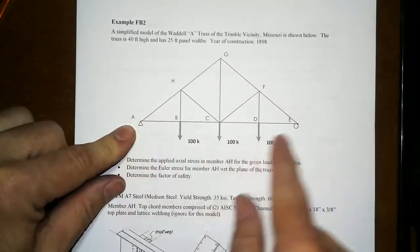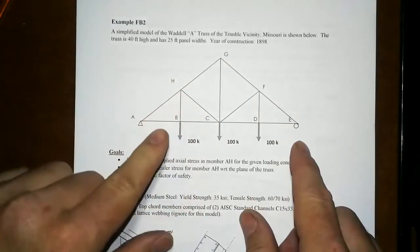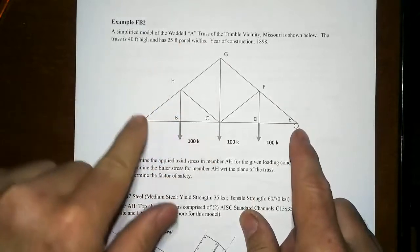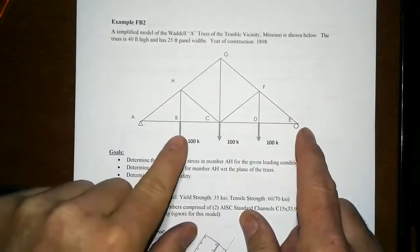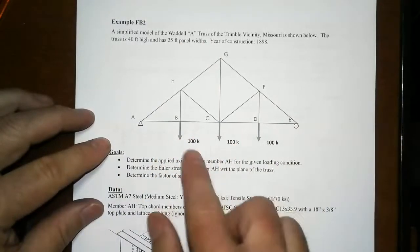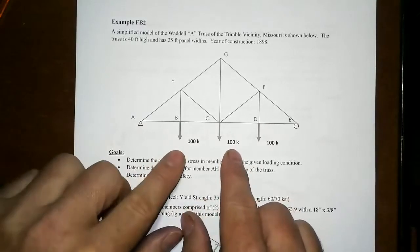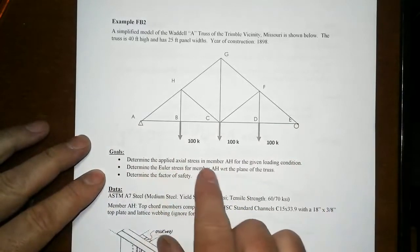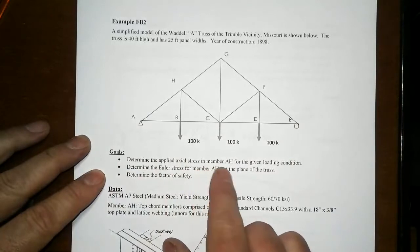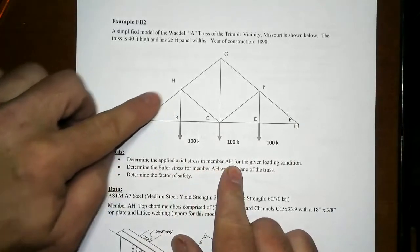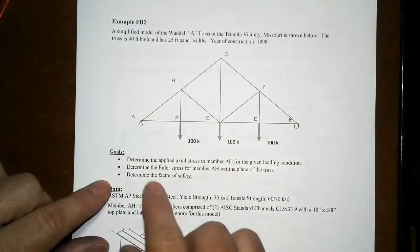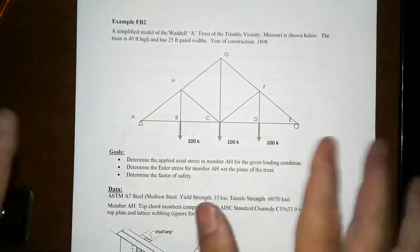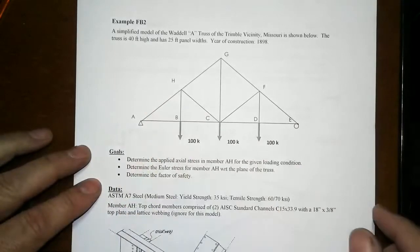This truss has 25-foot panel widths, so it's 100 feet long and 40 feet high, with three very heavy loads. This originally was a truss supporting a train, so these are very large loads. We're going to look at figuring out the applied stress in member AH, that compression cord member over here near the support. We're going to find the Euler stress in that member—that's the strength—and find the factor of safety. This is all about a buckling concern we might have in that particular member.